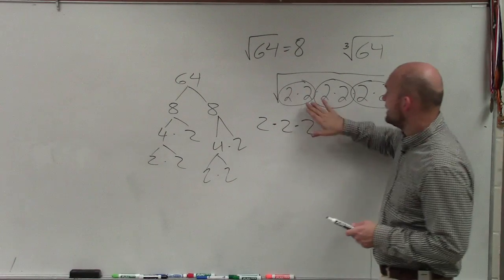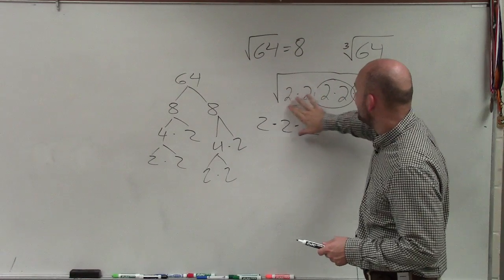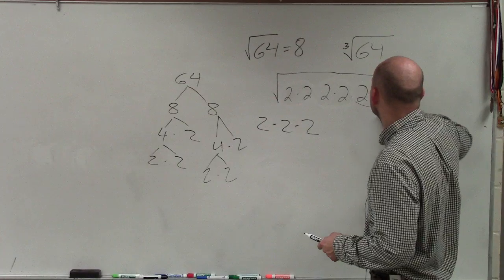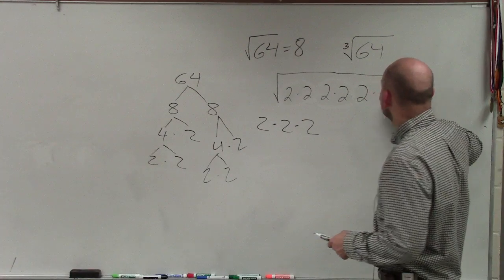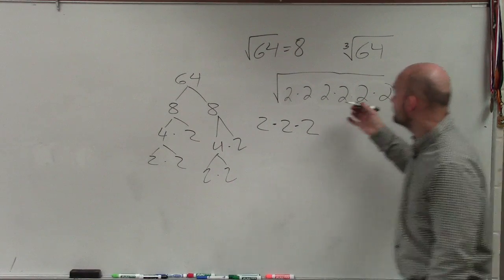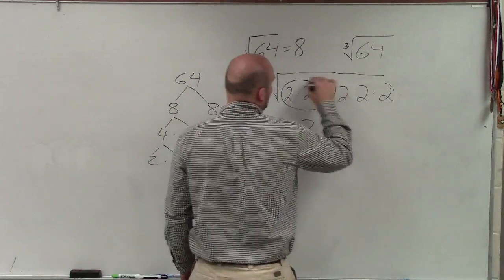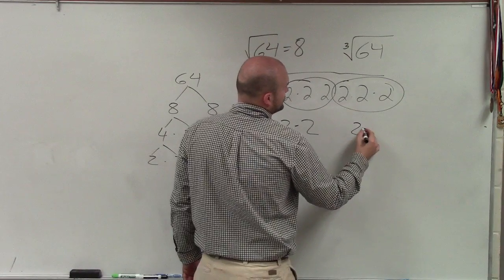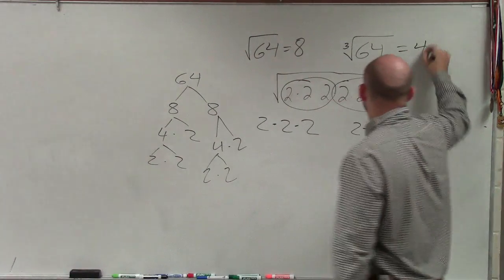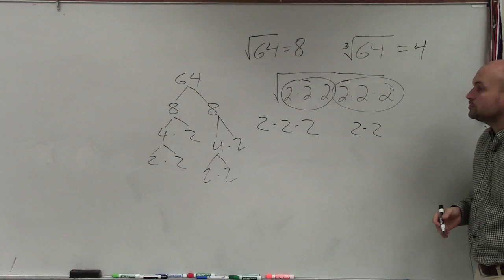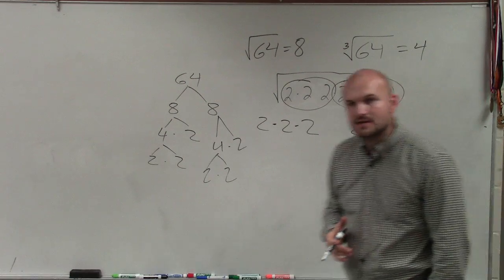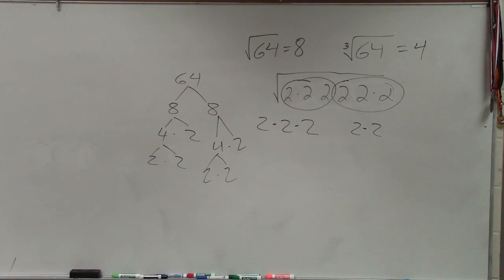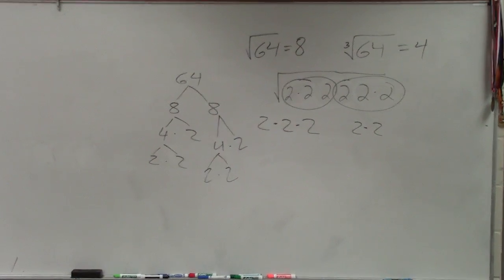Now, when we're looking at doing the cube root — if for the square root I'm taking pairs of 2's, what do you think I'm going to do for the cube root? 3's. I'm going to take out groups of 3's. So 1, 2 — that's just going to be 2 times 2, which is equal to 4. So the cube root of 64 is going to be 4. And that's basically what you're doing.